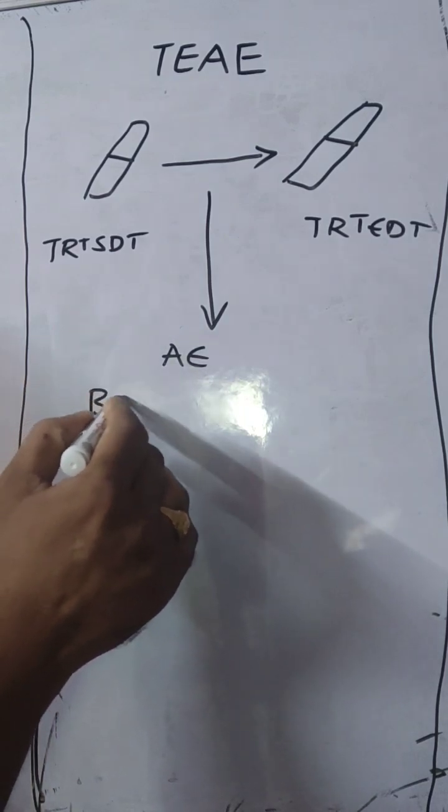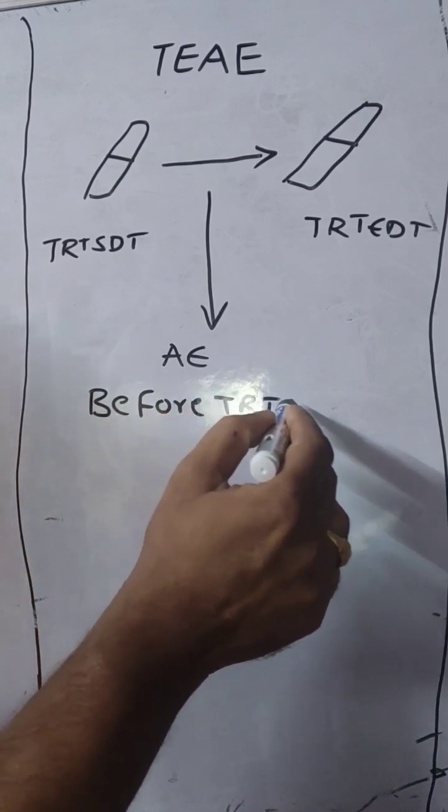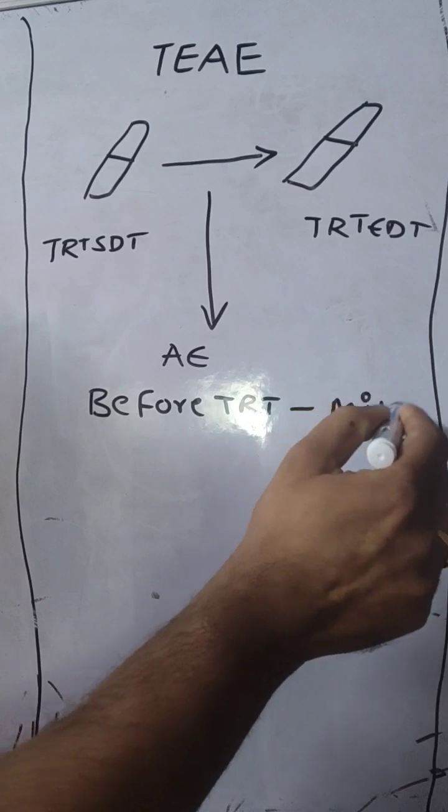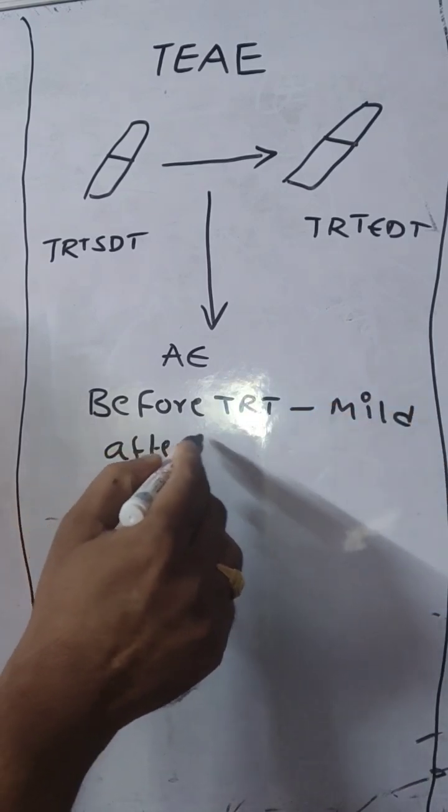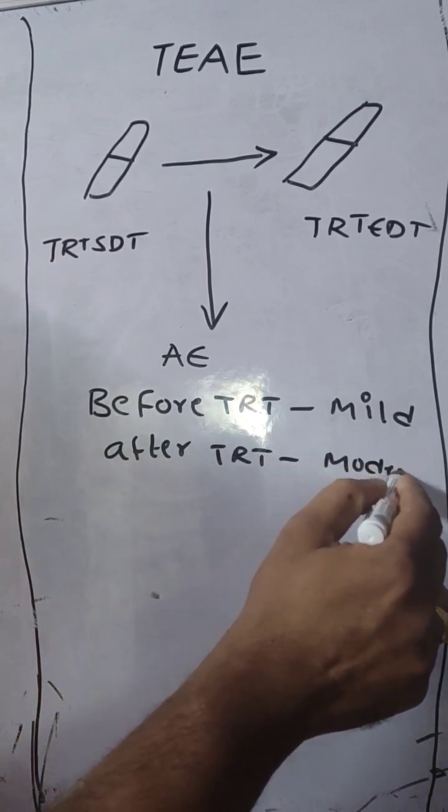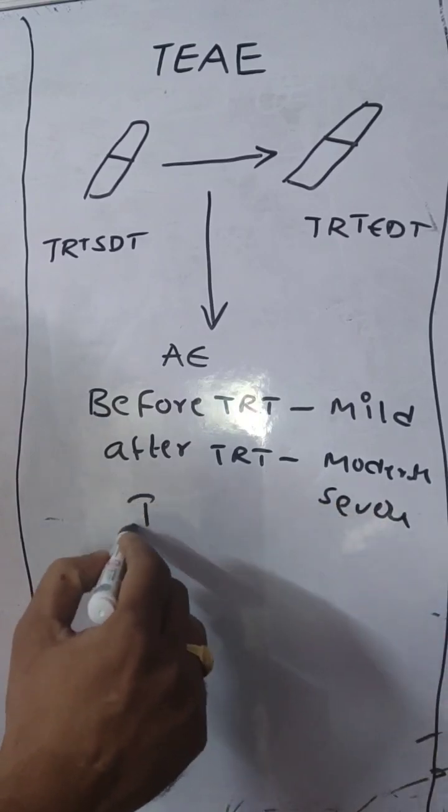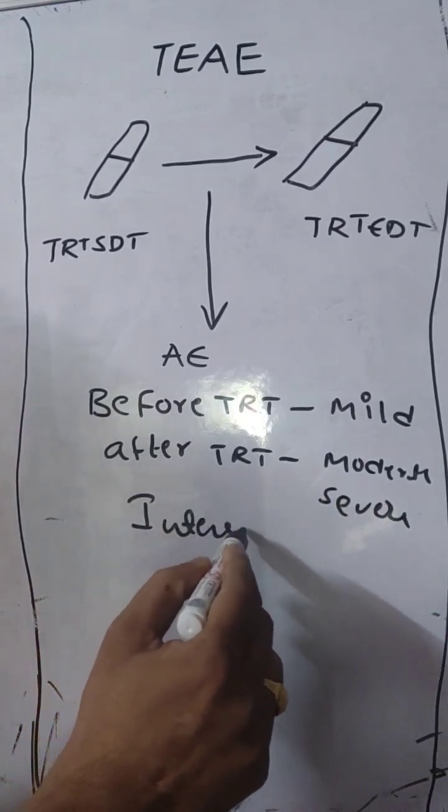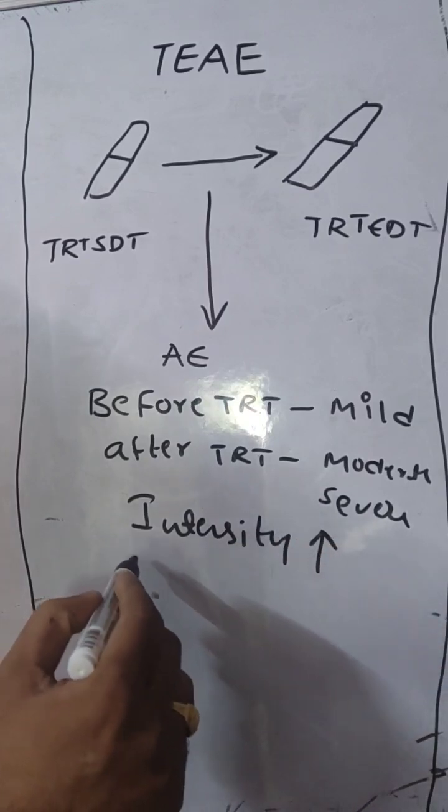For example, before the treatment the adverse event intensity was mild, and after taking the treatment if the adverse event intensity was increasing to moderate or severe - that means intensity was increasing - that type of scenario also we can consider that adverse event as treatment emergent.